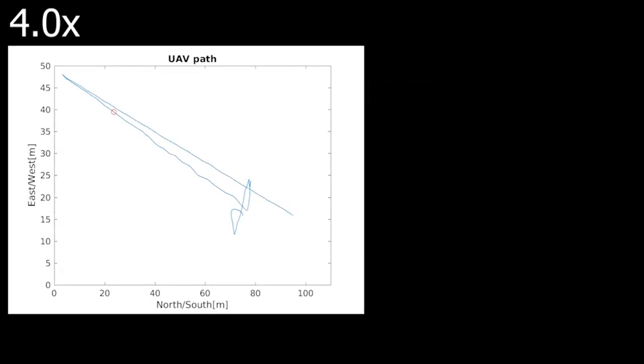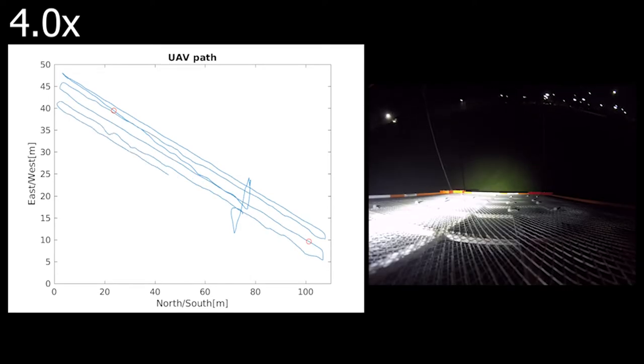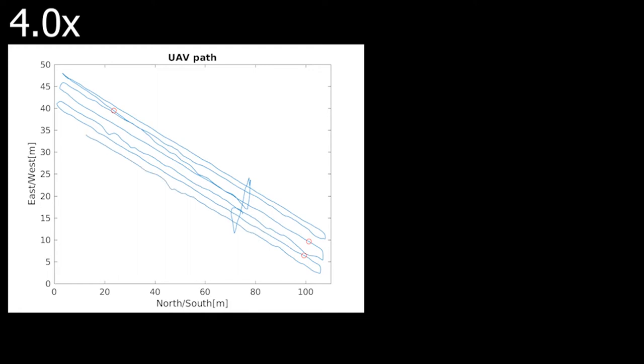The mission path plot highlights the locations of zapped mosquitoes. On the right, sparks show when mosquitoes are eliminated by the net.